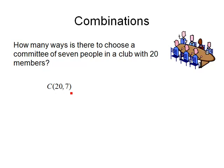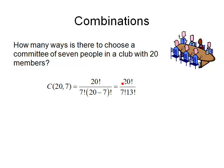When I work that out, I get 20 factorial divided by 7 factorial times 13 factorial. This leaves us with 20 factorial over 7 factorial times 13 factorial, and that amounts to 77,520.